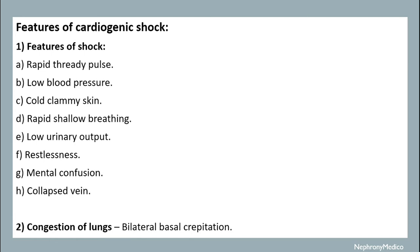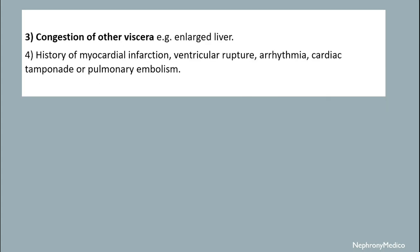Features of cardiogenic shock include signs of shock such as rapid pulse, low blood pressure, cold clammy skin, rapid shallow breathing, low urinary output, restlessness, confusion, and collapse. There are also lung findings such as bilateral crepitations.